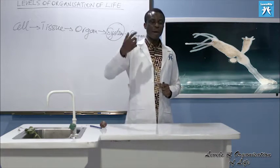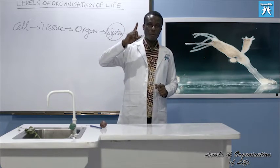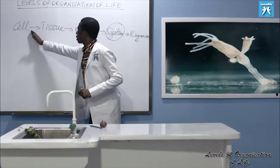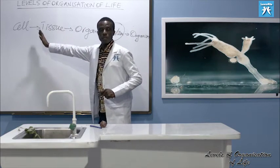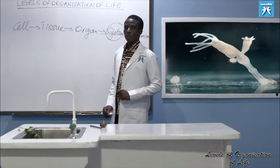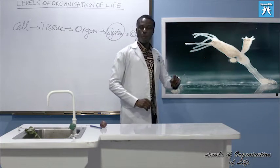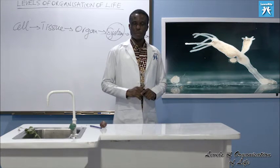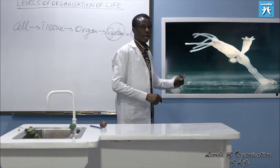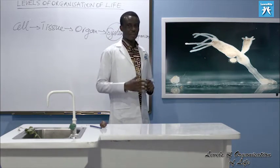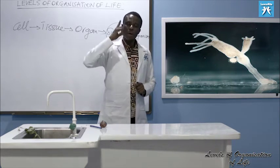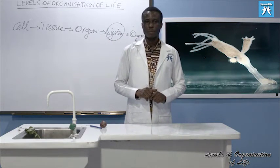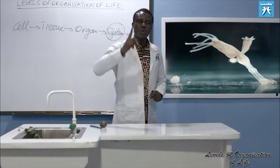Before we leave, let me remind you about complexity. As you move from cell to organism, we are moving to increasing complexity. Hydra is more complex than amoeba; agama lizard is more complex than hydra. A multicellular organism such as a human being has different types of cells, while a unicellular organism such as amoeba has only one type of cell.